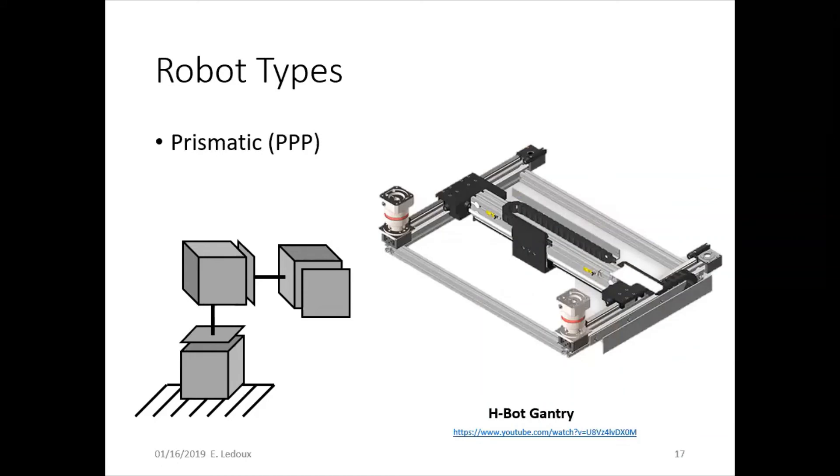A prismatic robot, PPP, this is like a gantry system. It could be used in a 3D printer or for moving boxes around a conveyor system for large-scale industrial settings. These are the easiest ones to calculate because it basically moves in X, Y, Z. So only three possible directions for it to go, very easy to calculate.